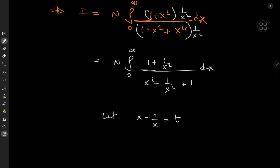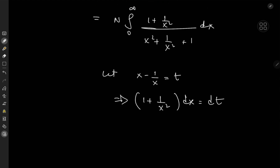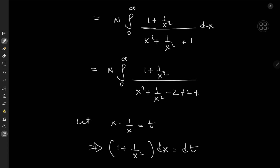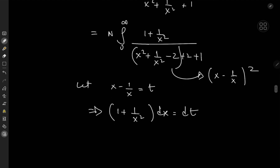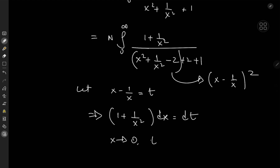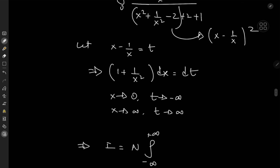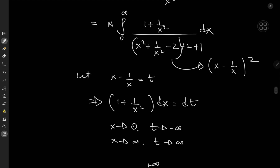We let t = x − 1/x, so differentiating gives (1 + 1/x²) dx = dt. We need the (x − 1/x)² term in the denominator. Expanding the denominator as (x − 1/x)² + 2 + 1, the substitution is clean. As x → 0, t → −∞, and as x → ∞, t → +∞, so I equals n times the integral from −∞ to +∞ of dt over (t² + 3).